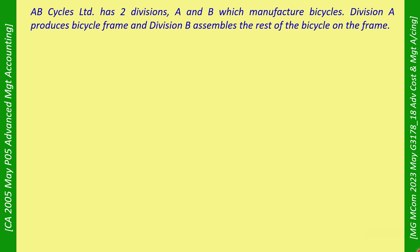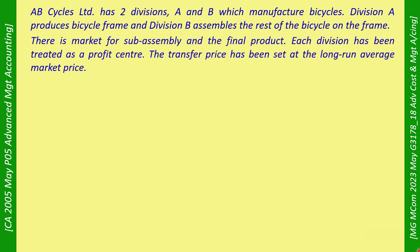AB Cycles Ltd. has two divisions, A and B, which manufacture bicycles. Division A produces the bicycle frame and Division B assembles the rest of the bicycle on the frame. There is a market for the subassembly and the final product. Each division has been treated as a profit center. The transfer price has been set at the long-term average market price.